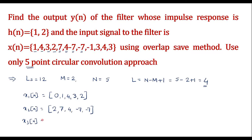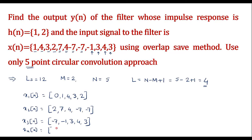Next, divide into x3[n]. This block takes the last m-1 samples of x2[n] — that is the last 1 sample, which is -7 — followed by the next 4 samples of x[n]: -1, 3, 4, 3. So x3[n] = {-7, -1, 3, 4, 3}. Now for x4[n], it consists of the last m-1 samples of x3[n], which is 3. Since all samples of x[n] are exhausted, we pad with zeros.